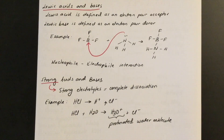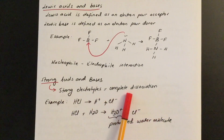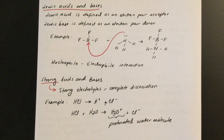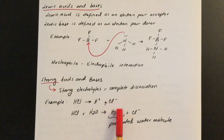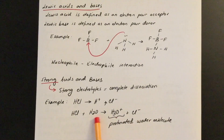For weak acids or weak bases, complete dissociation does not happen — instead you get partial dissociation. Strong electrolytes with complete dissociation applies to strong acids and strong bases. There are two ways to represent HCl dissociation: HCl → H⁺ + Cl⁻, or using the water molecule to transfer the proton: HCl + H₂O → H₃O⁺ + Cl⁻, where water accepts the proton from HCl.